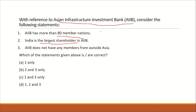If you don't really know about AIIB, it is very difficult to solve this. But if you read newspapers, you will know certain things. A basic thing is that this is a China-led initiative. When China leads any multilateral institution, it is very unlikely that India is the largest shareholder. So we can eliminate the second statement. AIIB does have members from outside Asia — that third statement is wrong. So our answer will be A.